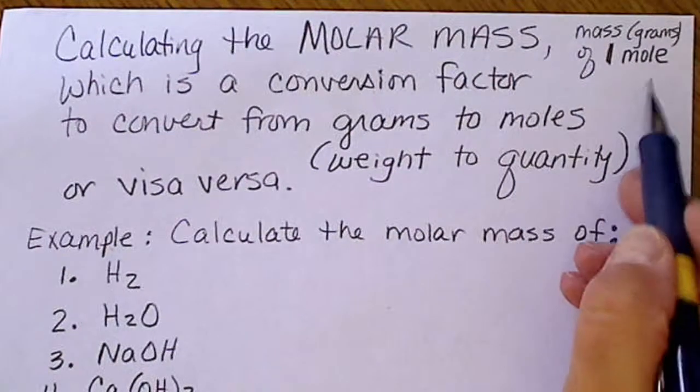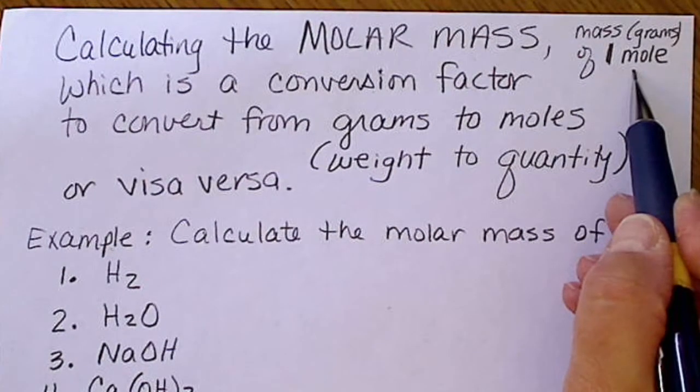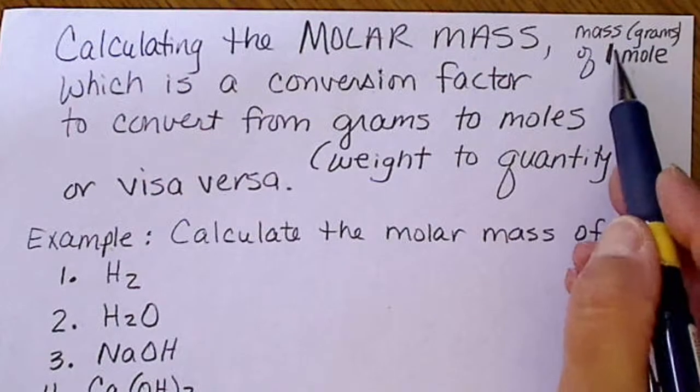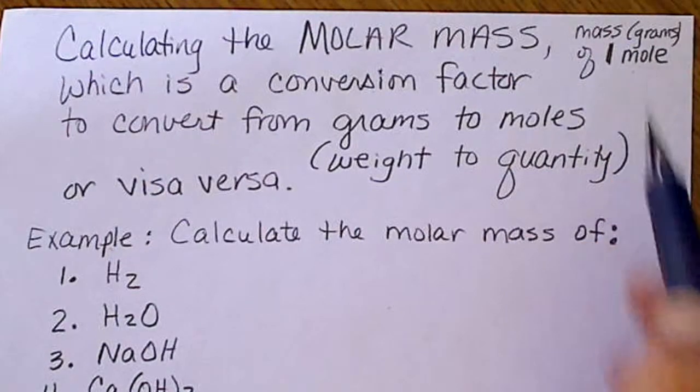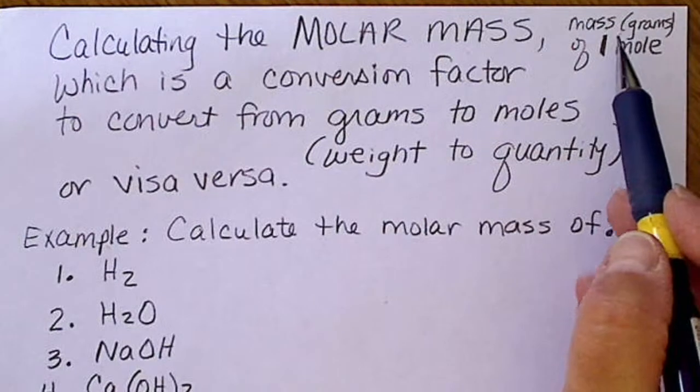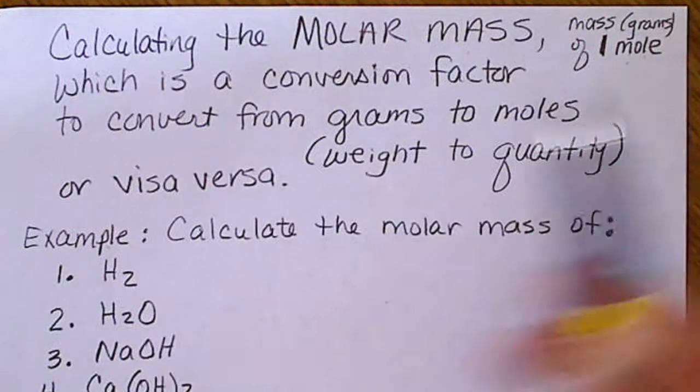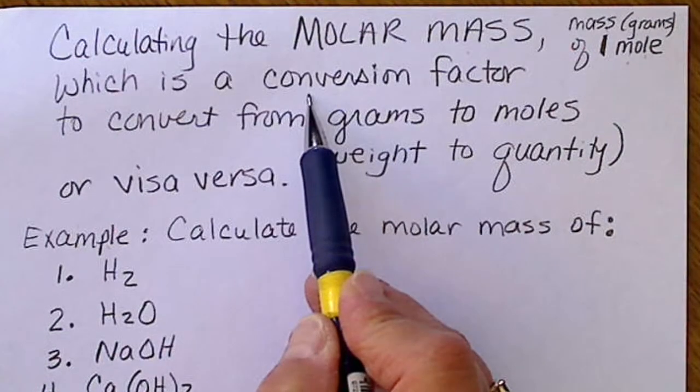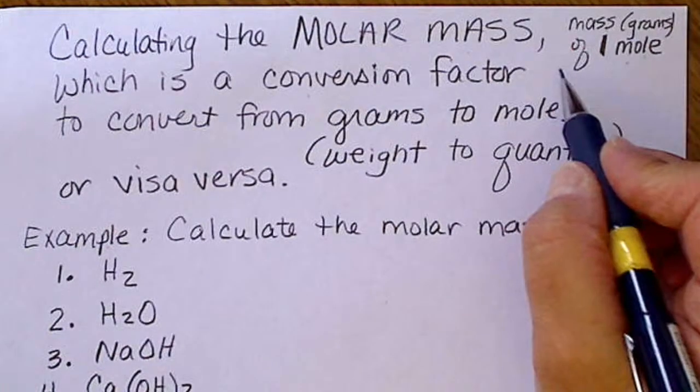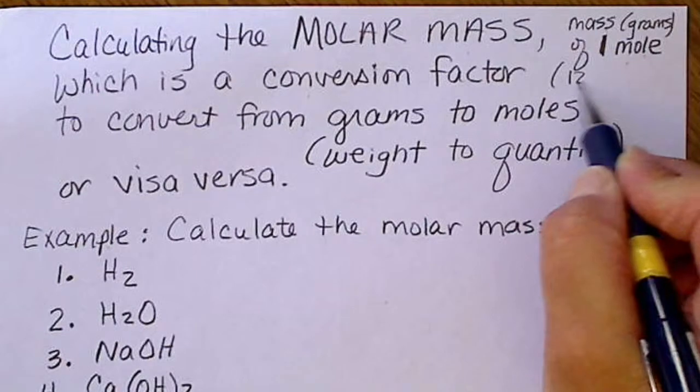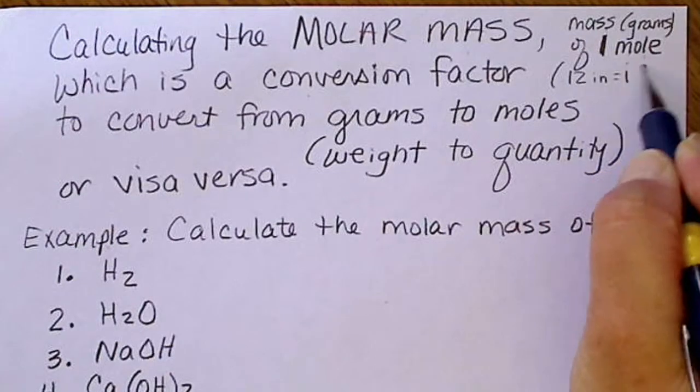It depends on the formula. We're going to have to put a gram unit per one mole when we do this. Mass will be in the numerator, one mole will be in the denominator. This will end up being a conversion factor, just like 12 inches equals one foot.